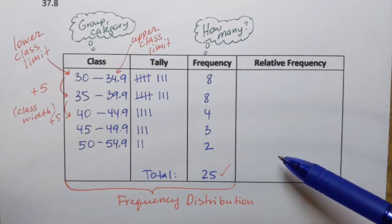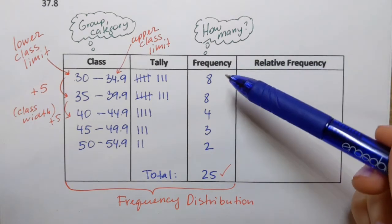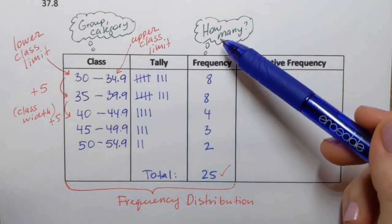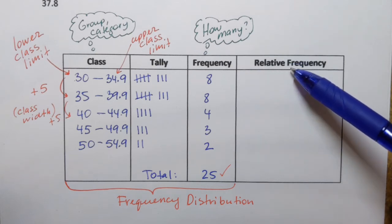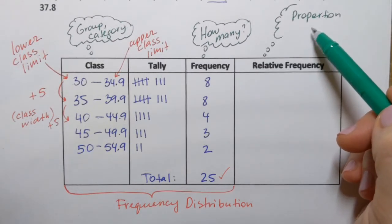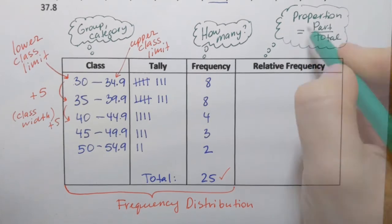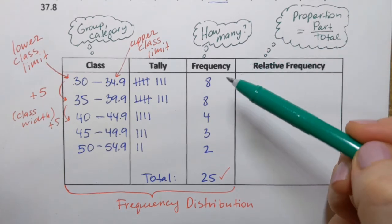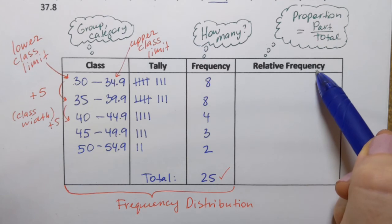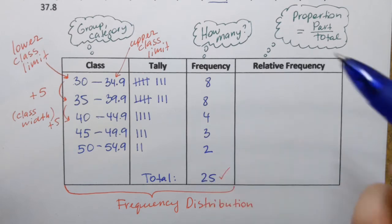Next, let's expand this table and add another column that we call relative frequency. So what is the difference between frequency and relative frequency? Well, frequency represents a number of observations in each class, each category. In other words, it answers the question how many. Relative frequency represents proportion of those observations in each class. So I wrote it here. But remember, to find proportion, we have to take the part and divide by the total. And in this case, part refers to the number of observations in each class, in other words, frequency. So to calculate relative frequency for each class, we have to take frequency for that class and divide by the total number of observations. So in our case, 25.